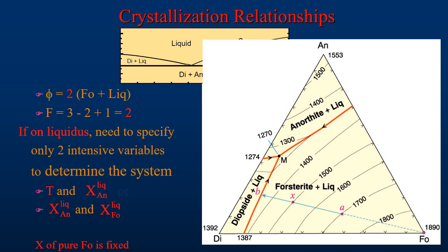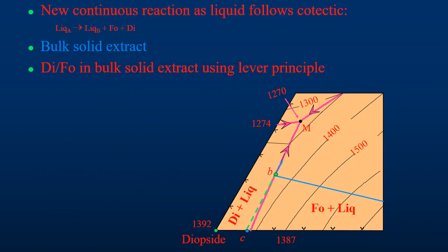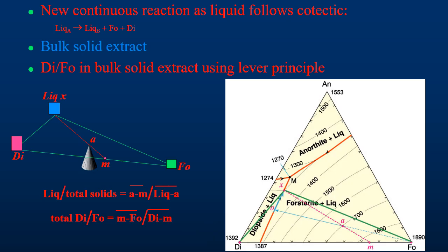Once the composition and temperature reach the cotectic point at point B, diopside is added as a solid phase, changing the degrees of freedom from 2 to 1. Now specifying only one intensive parameter completely determines the system. Since we fixed the composition of the solids, the composition of the liquid is now dependent on temperature and is constrained to follow the one-dimensional cotectic curve between the binary forsterite-diopside eutectic and the ternary eutectic as cooling continues. At any point during cooling, we can determine the percent of each mineral phase present and the percent melt for each given temperature using the lever principle.